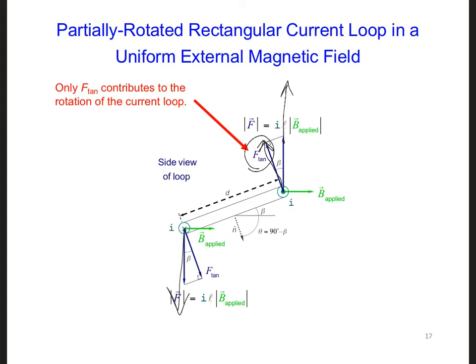We can define the torque, tau, in units of Newton meters, or nm. The amplitude of the torque will be F tan, the tangential component to the rotation, times D, where D is the width of the loop.